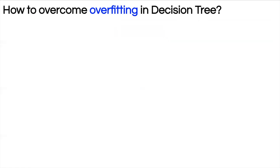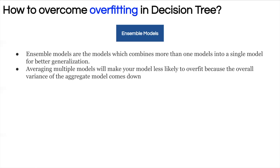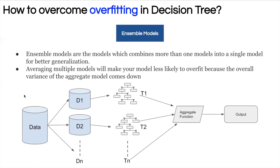A popular strategy to overcome overfitting is ensemble models. The goal of ensembling is to combine multiple models to create a meta-model that better generalizes on new data. To create an ensemble model for decision trees: split your data into multiple datasets, train a decision tree on each, generate predictions from each tree, then combine them using an aggregate function like weighted average, median, or mode to get the final prediction.